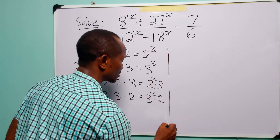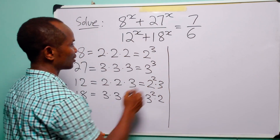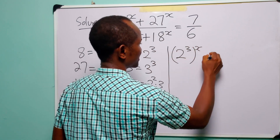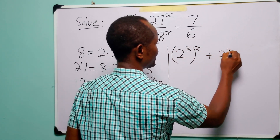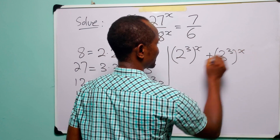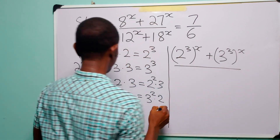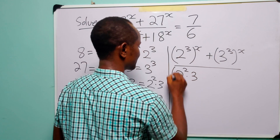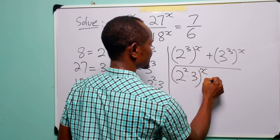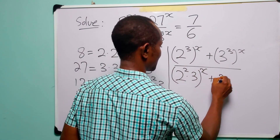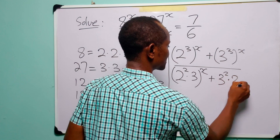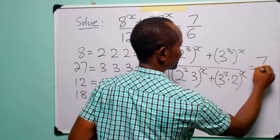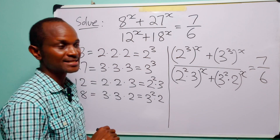When we have done this, this equation becomes 2 to the power of 3 to the power of x, plus 3 to the power of 3 to the power of x, divided by 2 to the power of 2 multiplied by 3 to the power of x, plus 3 to the power of 2 multiplied by 2 to the power of x. And this is equal to 7 over 6.